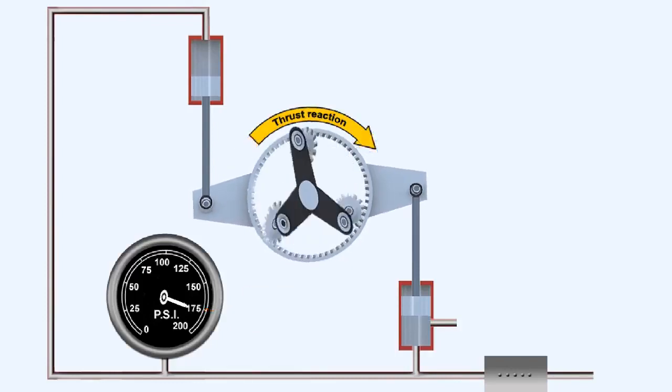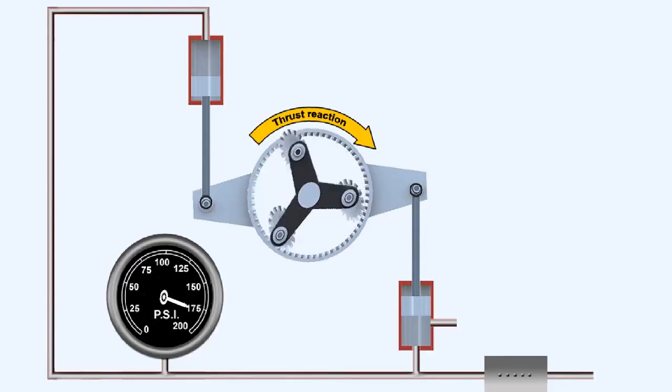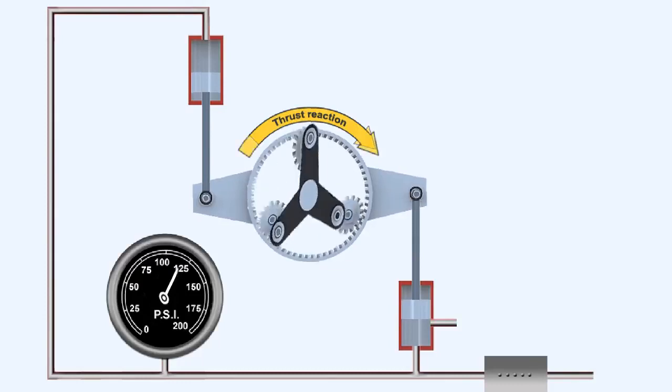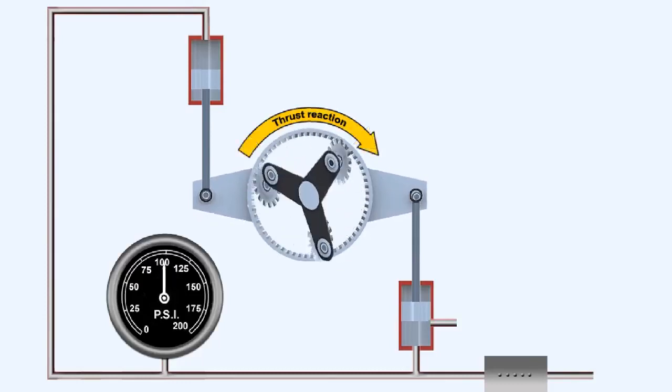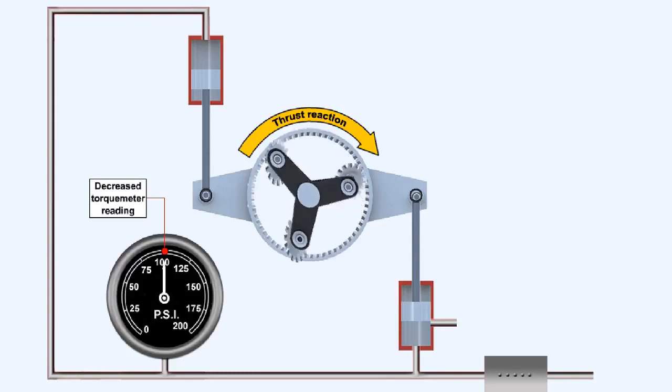If engine torque decreases, the oil pressure in the cylinders will now exceed the pressure required to balance the torque output of the engine, which is acting on the stationary ring gear. As a consequence, the pistons will now move to uncover more of the bleed hole. This will cause the oil pressure to decrease until the piston moves back into the sensitive position, where torque meter oil pressure once again balances engine torque. The decrease in oil pressure required to achieve this balance is indicated on the torque meter gauge as a fall in engine output torque.